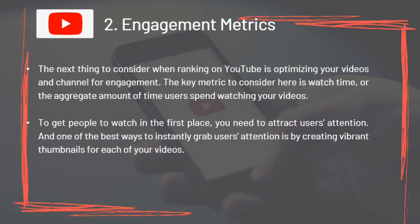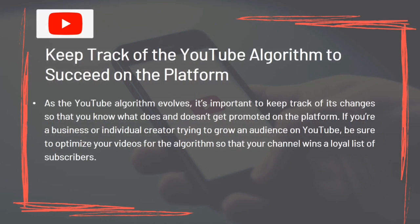The next thing to consider is optimizing for engagement. The key metric is watch time — the aggregate amount of time users spend watching your videos. To get people to watch in the first place, you need to attract attention, and one of the best ways is by creating vibrant thumbnails. As the YouTube algorithm evolves, keep track of its changes so you know what does and doesn't get promoted. Optimize your videos for the algorithm so your channel wins a loyal list of subscribers.